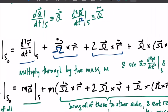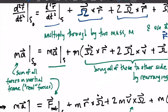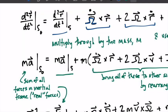We multiply through by the mass and use the familiar notation that the acceleration vector A is the second derivative of the position vector in the rotating frame — also written R-double-dot — and the velocity is the first derivative, R-dot. On the left we end up with mass times the acceleration in the inertial frame, which equals the sum of all the forces in the inertial frame. These are the real forces that you did physics with in freshman physics and before.